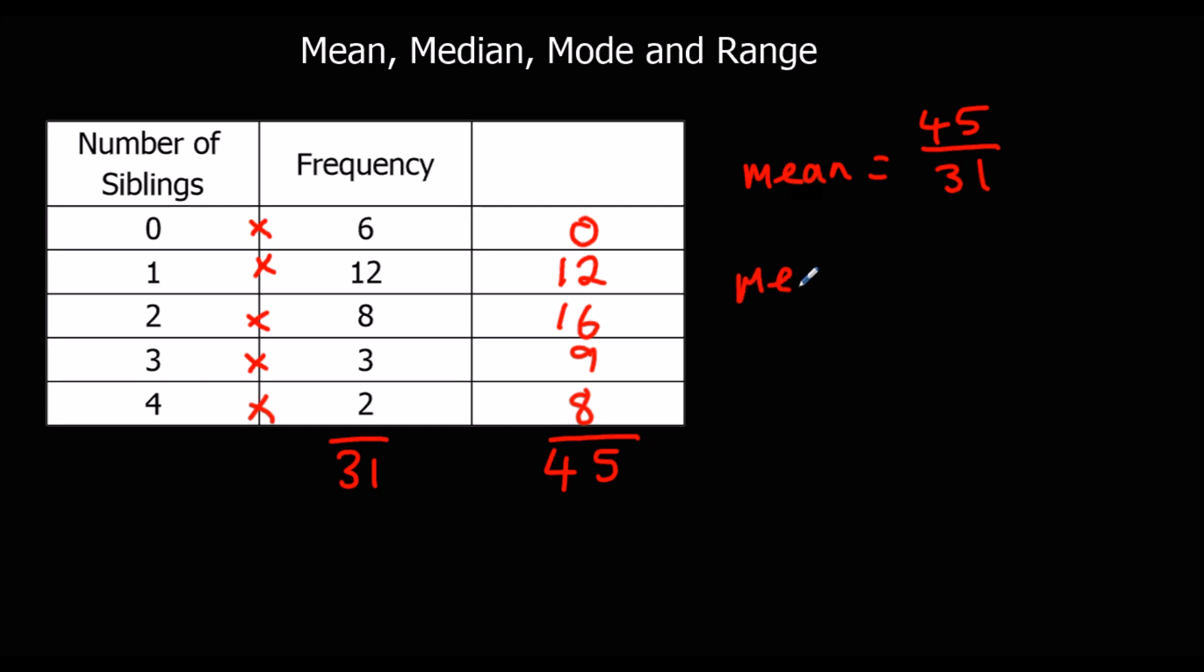So the median, if there's 31 people, we're looking at the middle number, so half of 31 is 15 and a half.